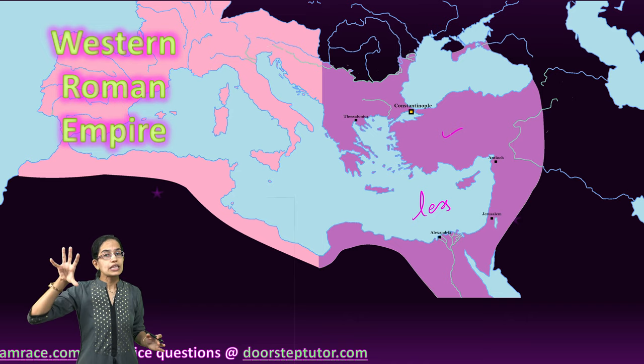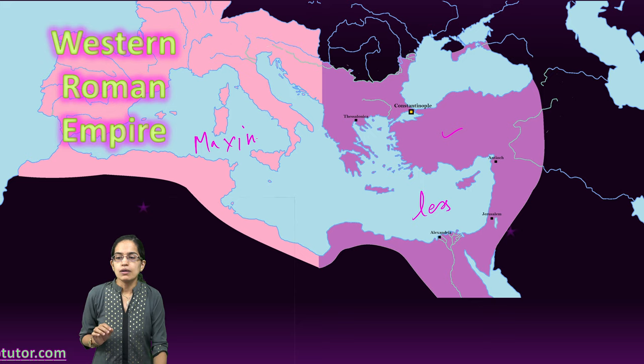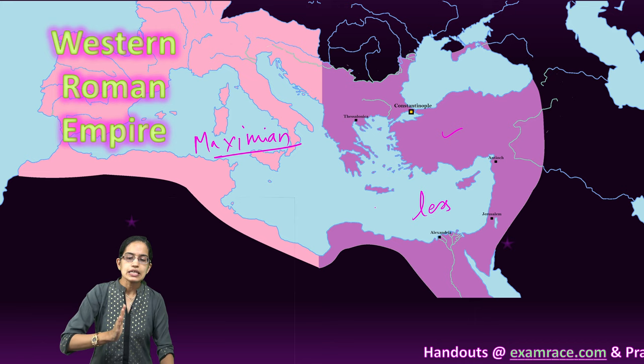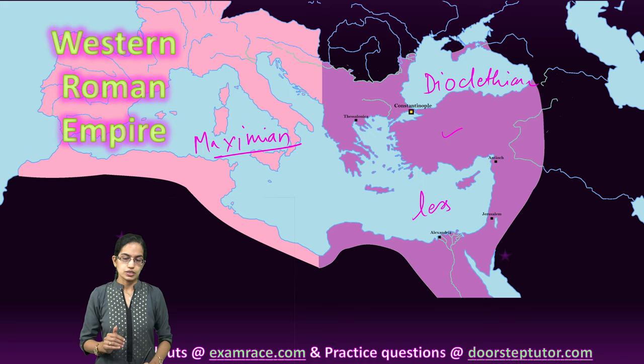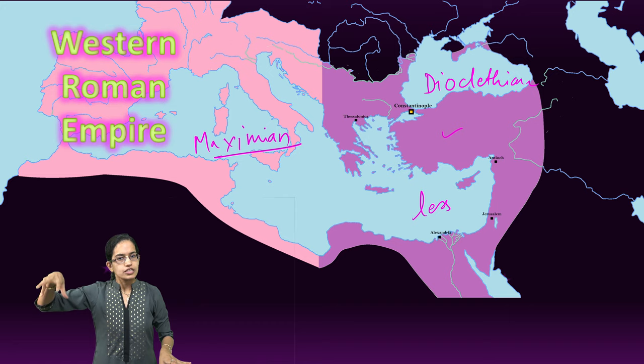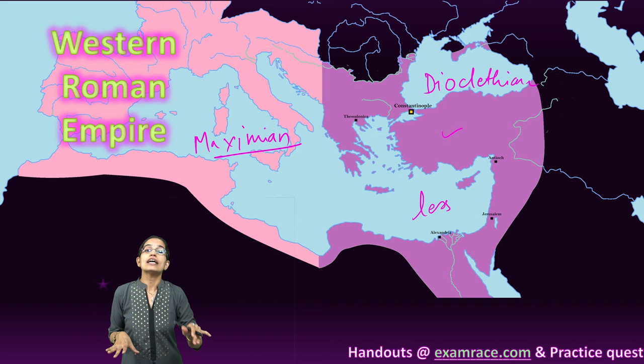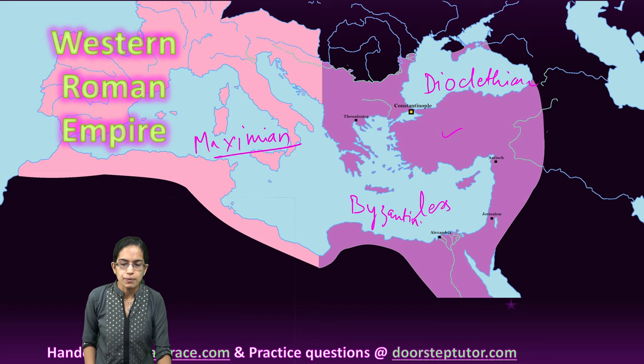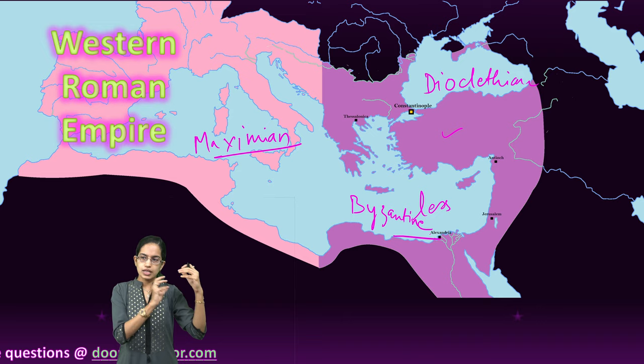The Western Roman Empire was under Emperor Maximian, who was the main ruler in the Western European region. In the Eastern European region, Diocletian was one of the major rulers. The region was clearly divided into Western Roman and Eastern Roman. The Eastern Roman area was also known as the Byzantine Empire — another important term to remember, which refers to the Eastern Roman region during that time.